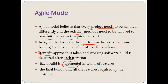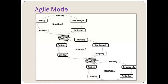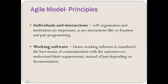The agile model has four principles. First, individuals and interaction: self-organization and motivation are important, as are interactions like co-location and peer programming — wherever and whenever needed, peer programming should be encouraged. Second, working software: a demo of working software is considered the best means of communication with the customer to understand their requirements, instead of just depending on documentation.